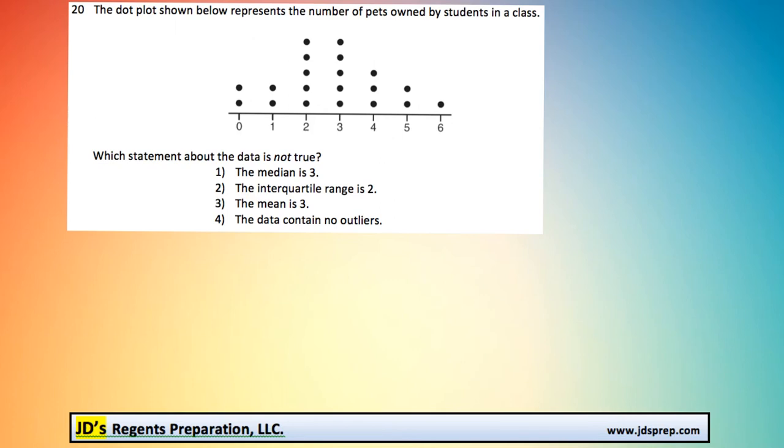This is question number 20 from the June 2016 Algebra Regents exam. We've got a dot plot here that is showing the number of pets owned by students in a class. And it looks like we're looking for a statement about the data that's not true.